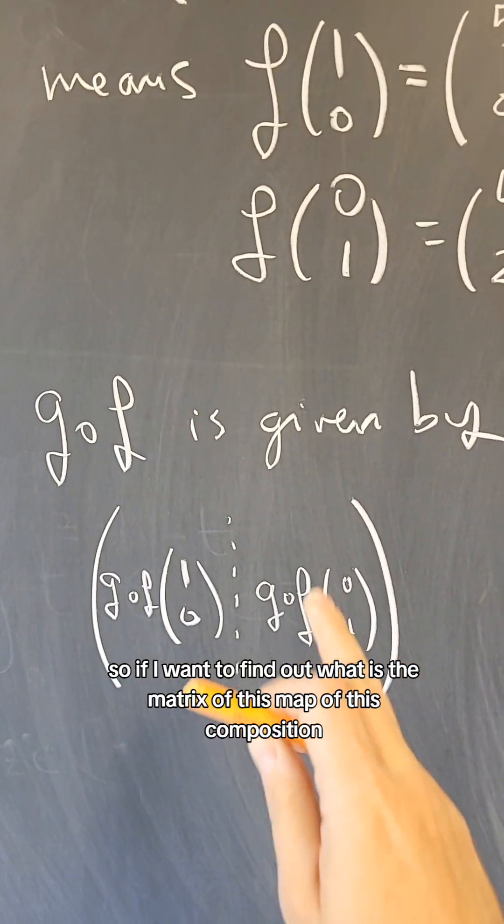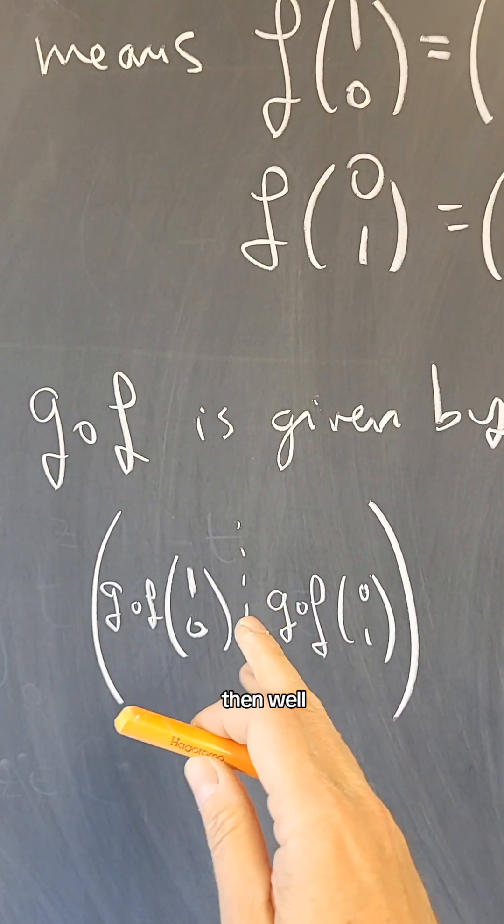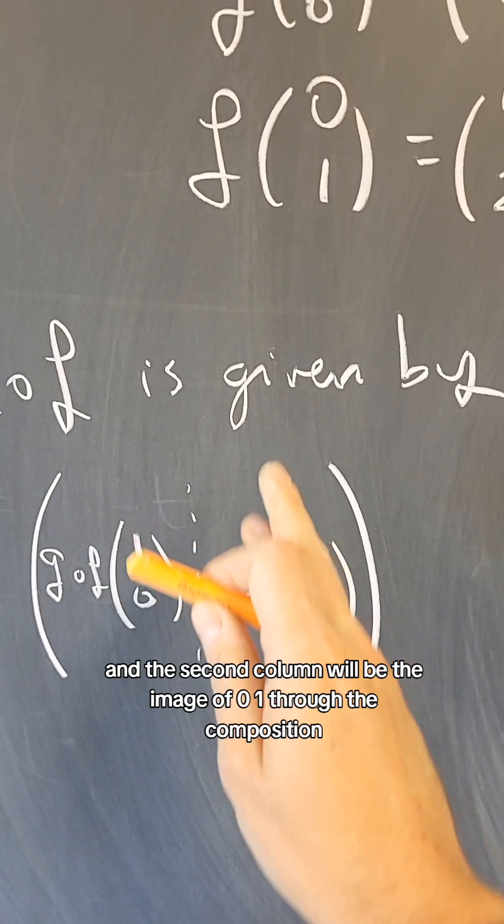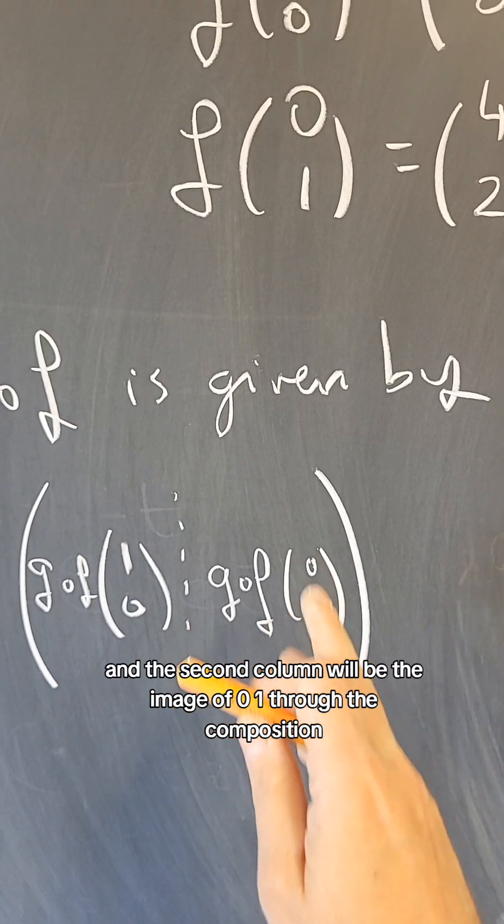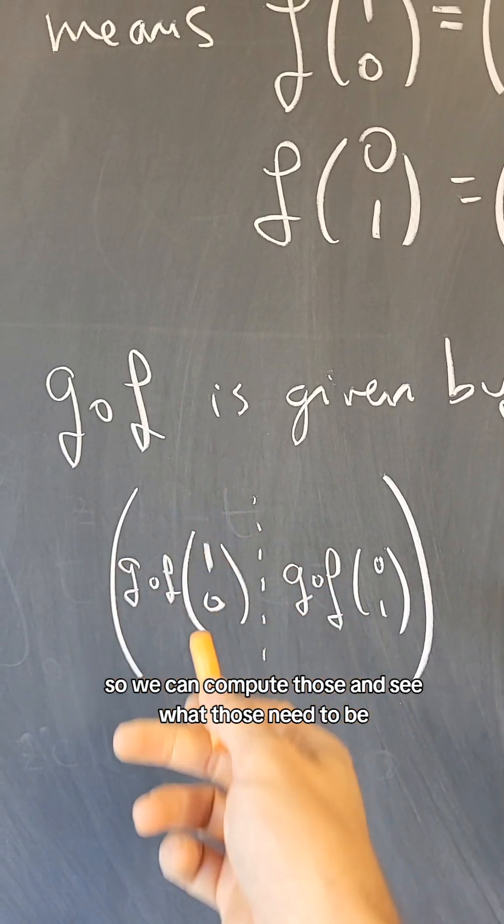So if I want to find out what is the matrix of this map, of this composition, then the first column will be the image of (1, 0) through the composition, and the second column will be the image of (0, 1) through the composition. So we can compute those and see what those need to be.